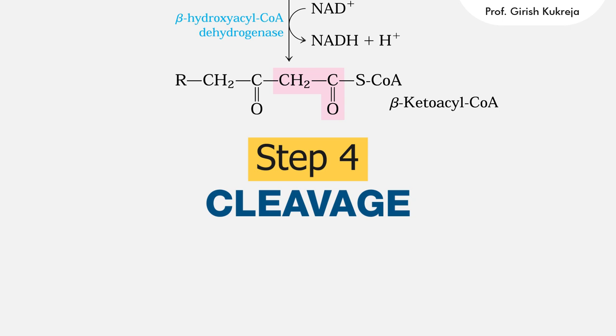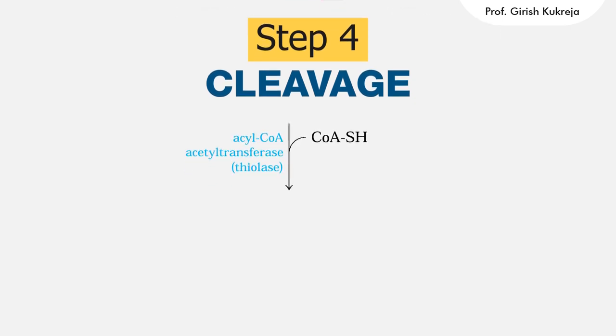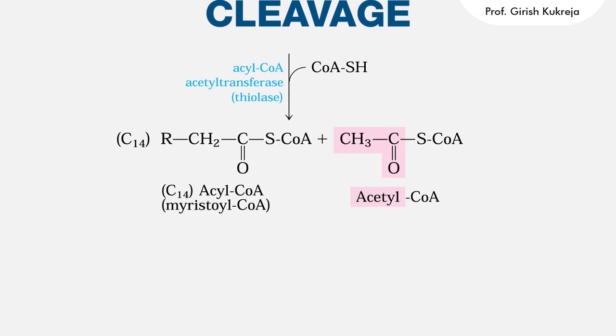Step four is cleavage or thiolysis. It is catalyzed by thiolase or acyl-CoA acetyl-transferase with free coenzyme A. There is a splitting of beta ketoacyl-CoA from the carboxyl terminal of the two carbon fragment as acetyl-CoA. The other product is coenzyme A-ester of the fatty acid now shortened by two carbon atoms.